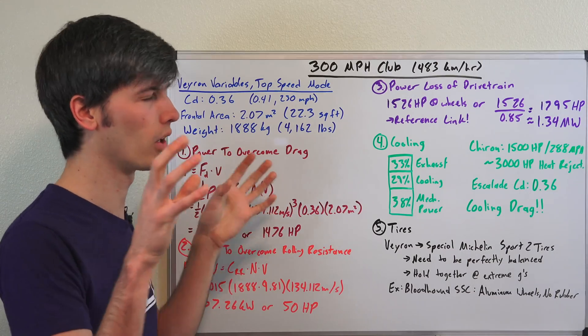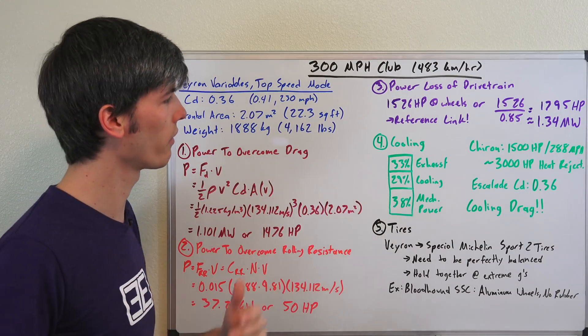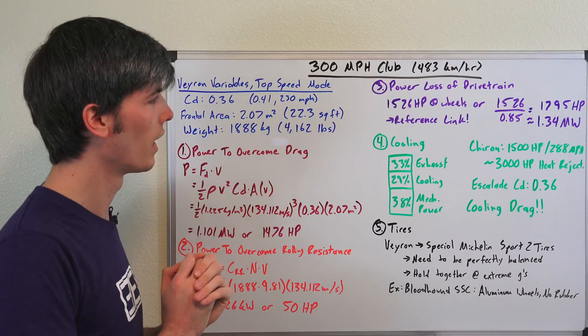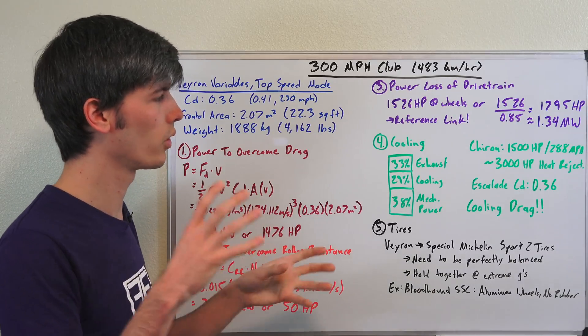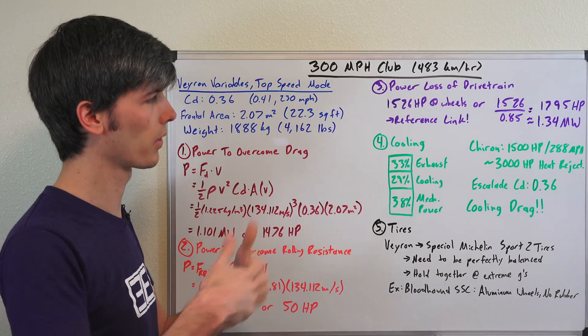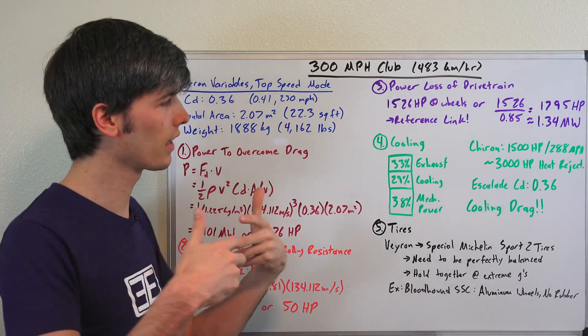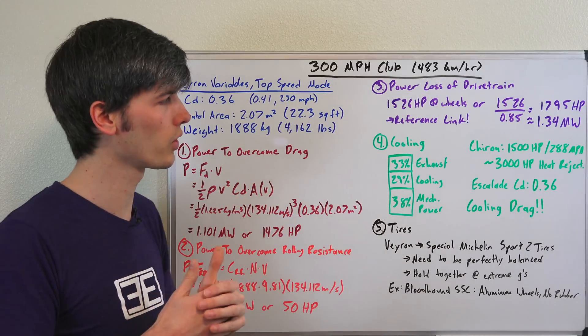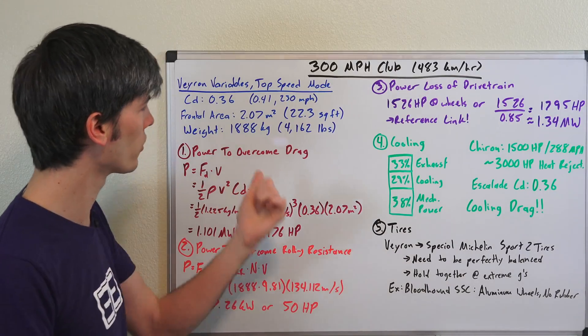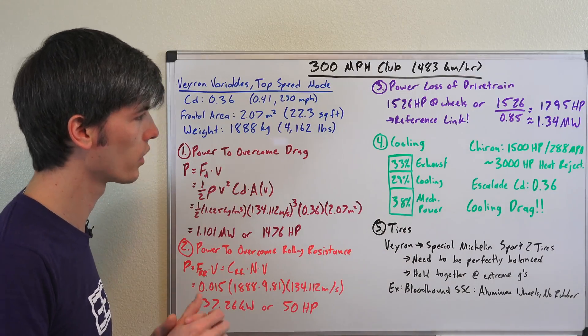So you've got all of these different ports on there. The Bugatti Veyron has something like 10 radiators, 10 heat exchangers, and so you've got all these air ports on your vehicle to be able to suck in that air. And sucking in that air and passing it through these heat exchangers creates a lot of drag. And so that's why it has this drag coefficient of 0.36.